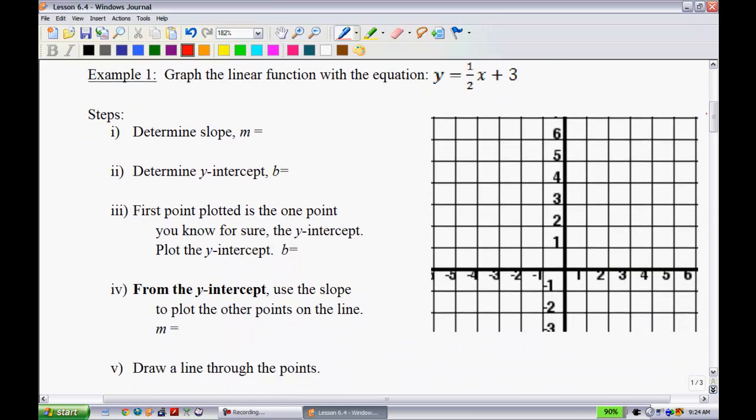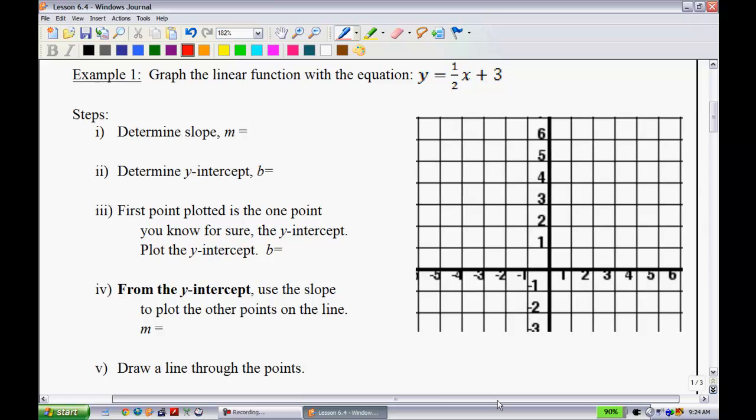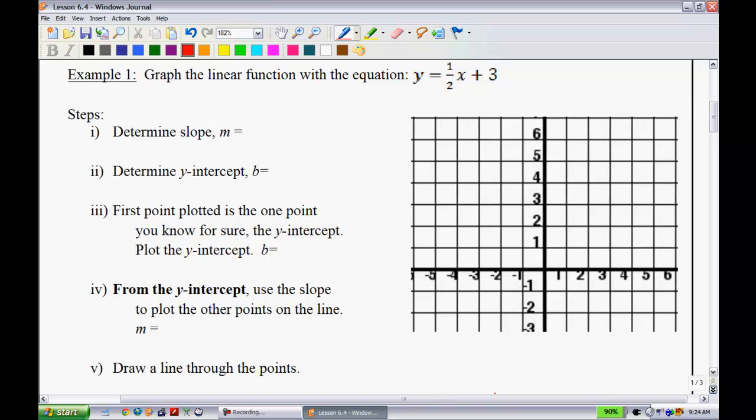Let's take a look at it. Graph the linear function y equals 1 half x plus 3. So in order to do this, I start out, my slope is 1 half, my y-intercept is 3. The first point plot is the one that you know for sure, and that's the y-intercept. So that means I'm going to put a big dot right here at 3.